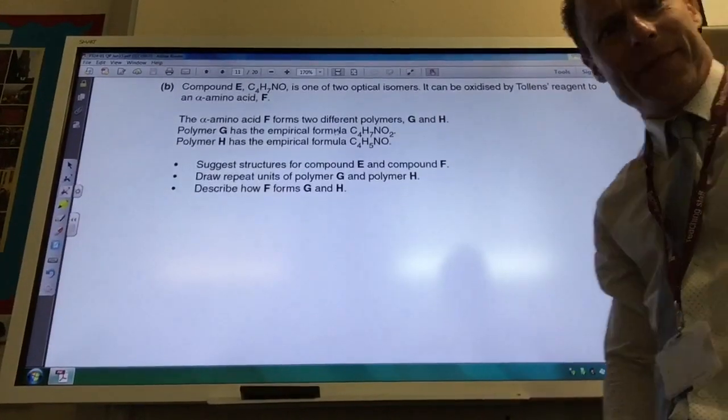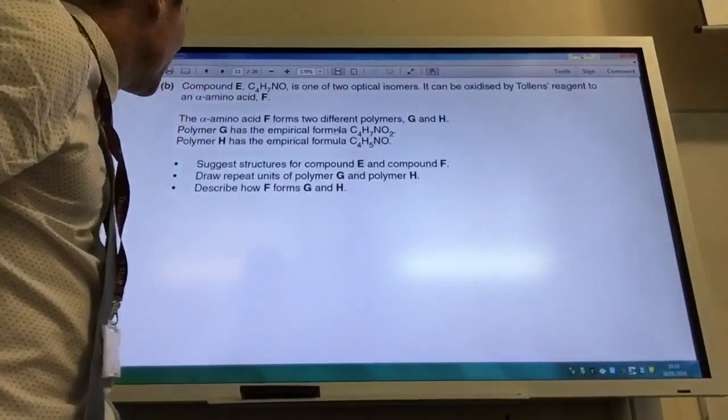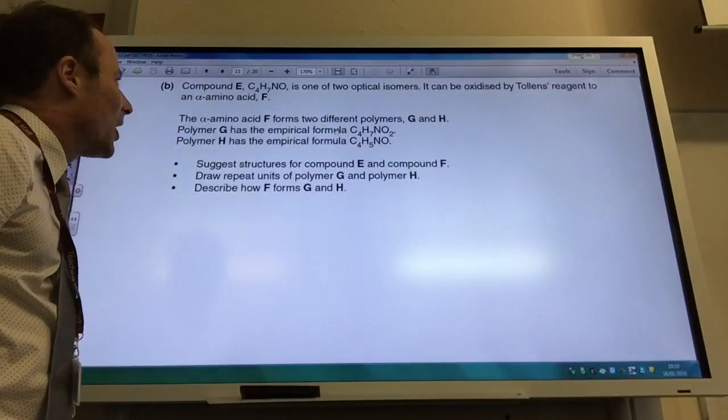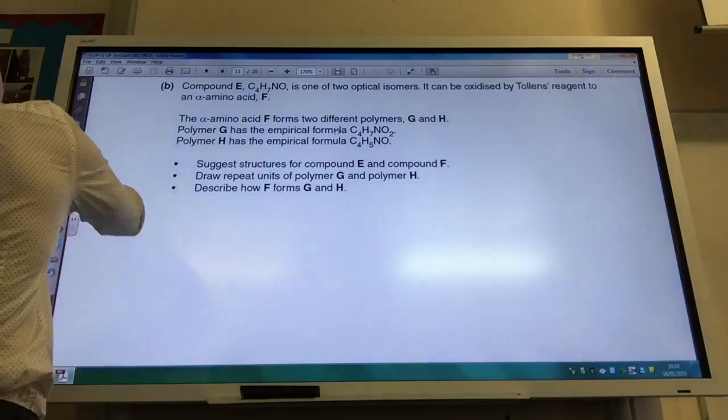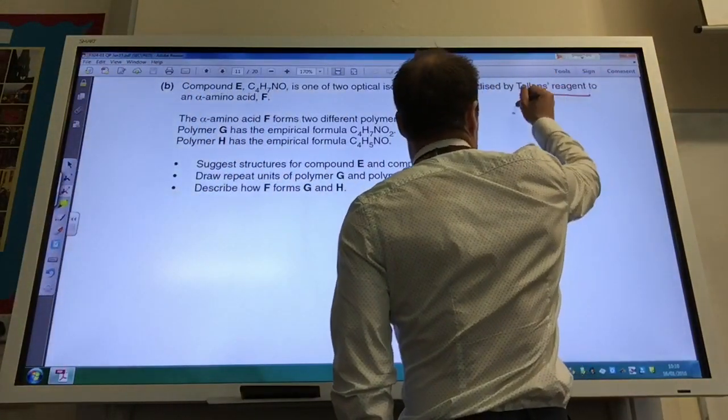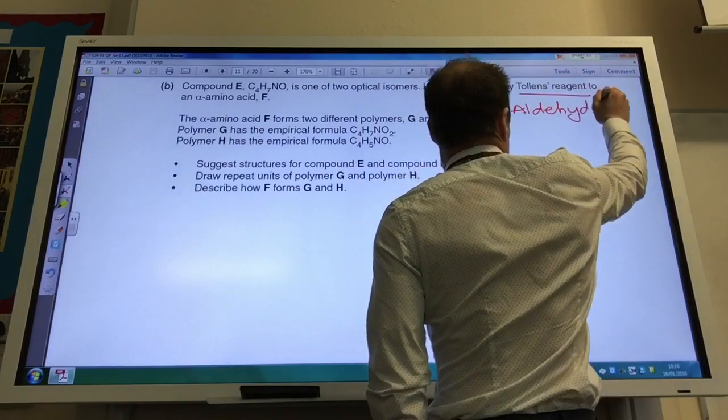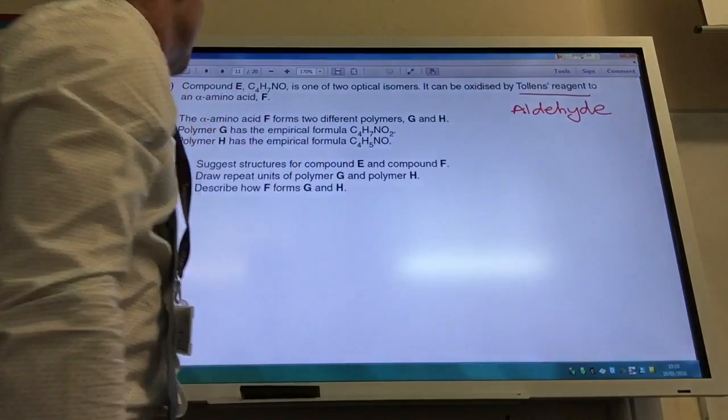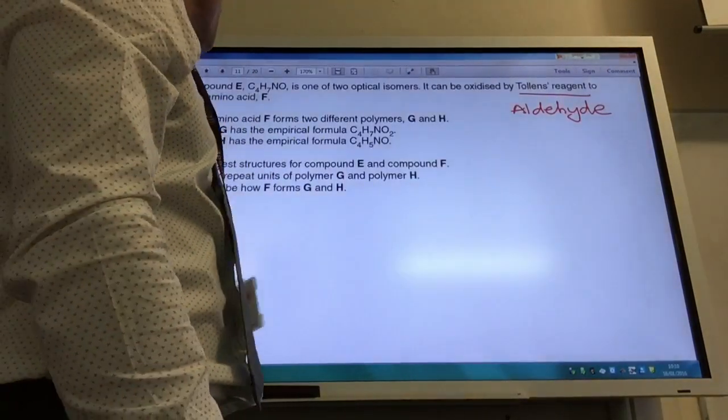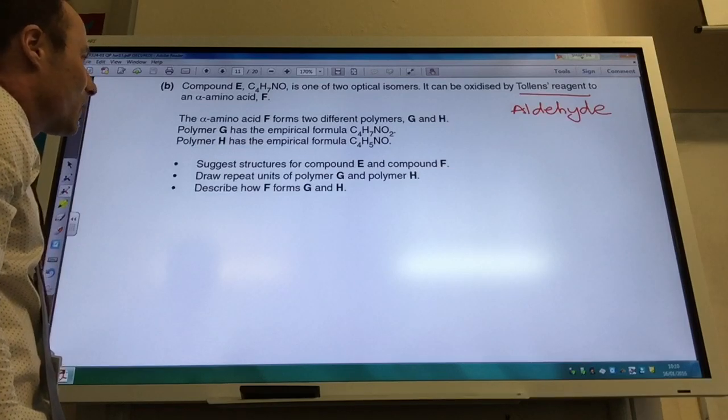Okay, so this is quite a difficult one actually, it may freak you out a little bit. Compound E, C4H7NO, is one of two optical isomers. It can be oxidized by Tollens reagent, that's telling me of course it has an aldehyde group to an alpha amino acid. It forms two different polymers, G and H.